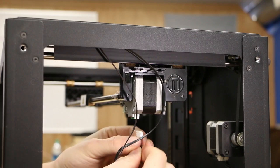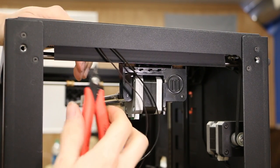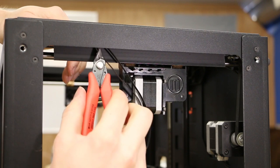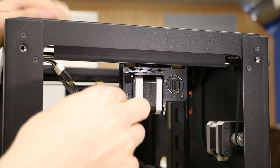Remove the motor cable as well. There should be a small zip tie holding the cables to the top of the frame. Gently cut this to ensure no damage to the wires.